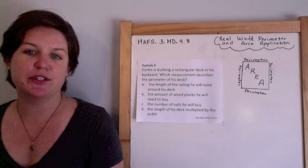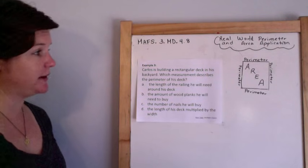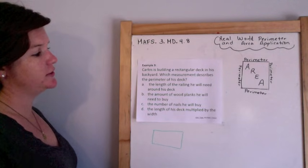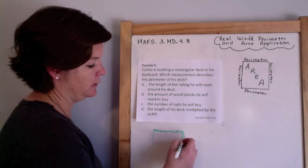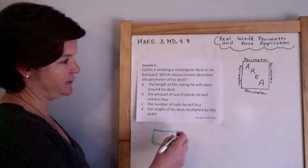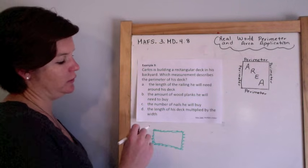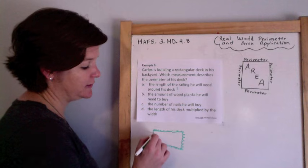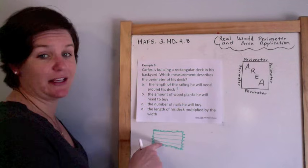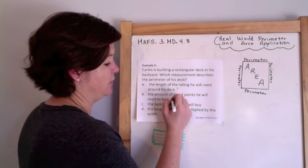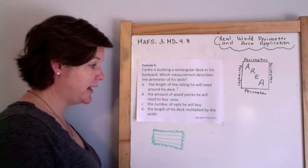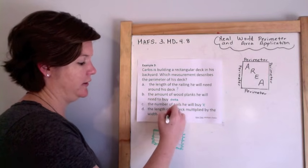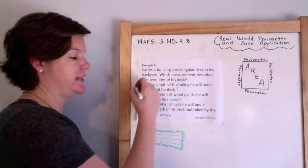Example 3. Carlos is building a rectangular deck in his backyard. Which measurement describes the perimeter of his deck? The length of railing he will need around his deck — if he's putting railing up, he would be adding all sides up, so yes, that's correct. The amount of wood planks he needs to buy would be covering the area inside — wrong. The number of nails he will buy — no. The length multiplied by the width would determine area — wrong. The correct answer is the length of railing.